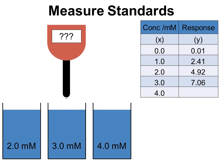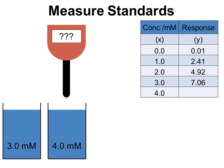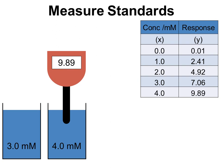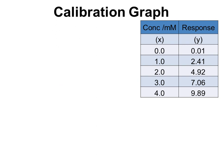We'll just move on to our last standard. And obviously each time we're recording the response from the instrument in our table. So now we've got our response from the instrument versus the concentrations that we've created for our standards. We can now create a calibration graph.